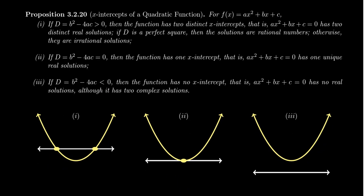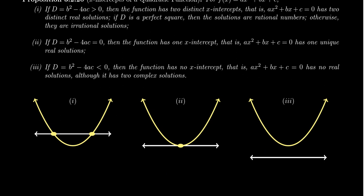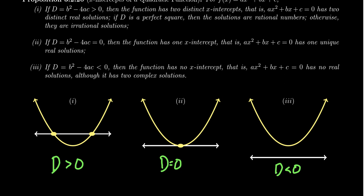To summarize these three possibilities: when the discriminant is positive, you get two distinct x-intercepts on the graph and two distinct real solutions — rational if D is a perfect square, irrational if not. If the discriminant equals zero, you get one x-intercept and one real solution. When the discriminant is negative, the quadratic equation has two non-real solutions, and the graph has no x-intercepts — it is either entirely above or entirely below the x-axis.